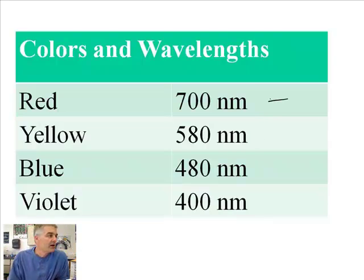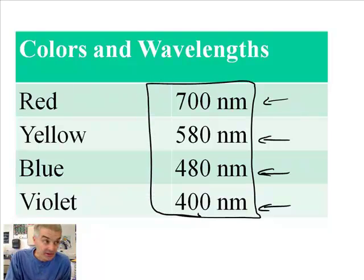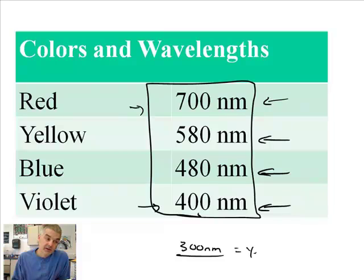Here's just a table. Red light, 700 nanometers. Yellow, 580. Blue, 480. And violet, 400. This is all you can see with your eyes, assuming you're not color blind. You can only see light from 700 nanometers down to 400 nanometers. But is there such a thing as light that would be like 300 nanometers? The answer, of course, is yes. And your eyes can't see that.